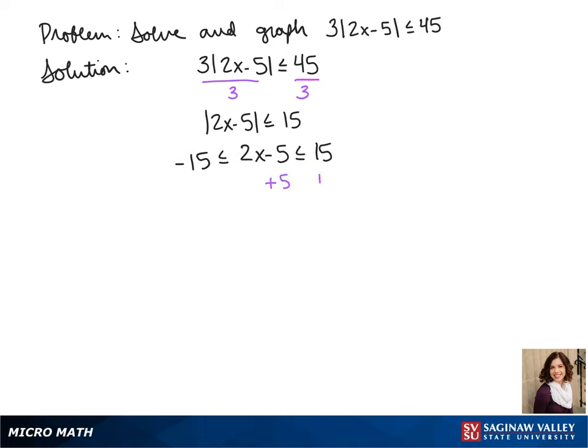Our next step is to add 5 to each side, and we get negative 10 is less than or equal to 2x and less than or equal to 20. Next, we divide each part by 2, and we get negative 5 is less than or equal to x and less than or equal to 10.